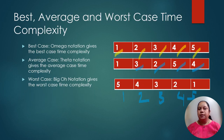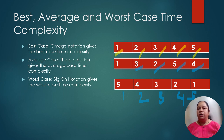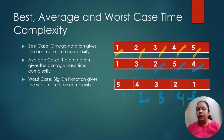Let us understand the meaning of best, average, and worst case time complexity. On the right-hand side, we have an array — a continuous set of memory locations of the same type — with 5 elements, and we need to arrange them in ascending order, which goes from the lowest to the highest. If we see this data, it is already in ascending order: 1, 2, 3, 4, 5 — already in sorted order. So the amount of time required by the algorithm to sort this data is very minimum because it is already in sorted order. This is called the best case, and the Omega notation gives the best case.